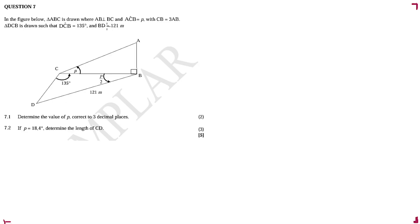We're given a figure where triangle ABC is drawn with perpendicular lines AB and BC. We're also given angle P, and there's a relationship: CB is equal to three times AB. Triangle DCP is drawn such that angle DCP is equal to 135 degrees, and BD is equal to 121 meters.